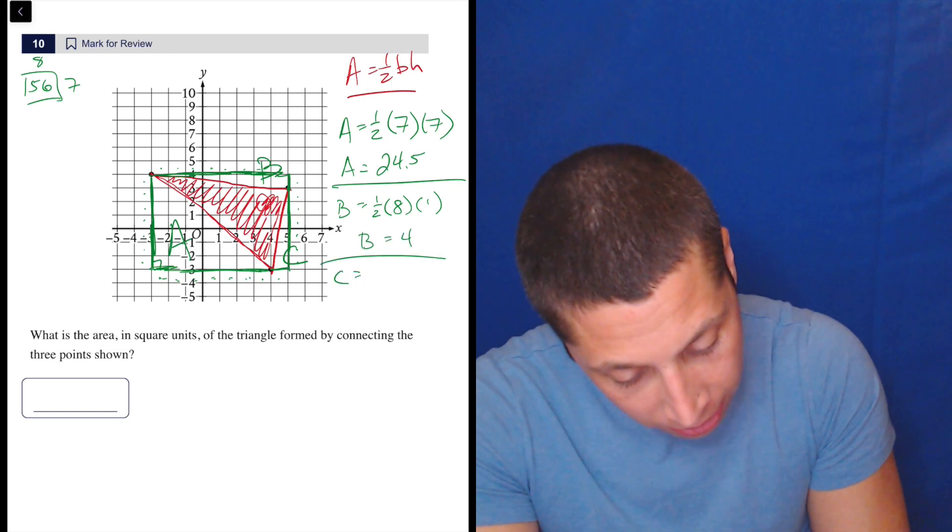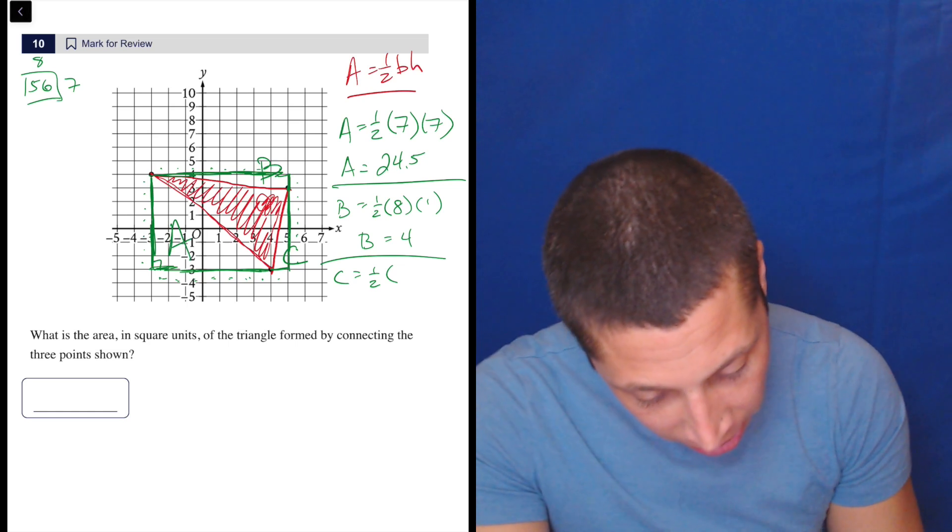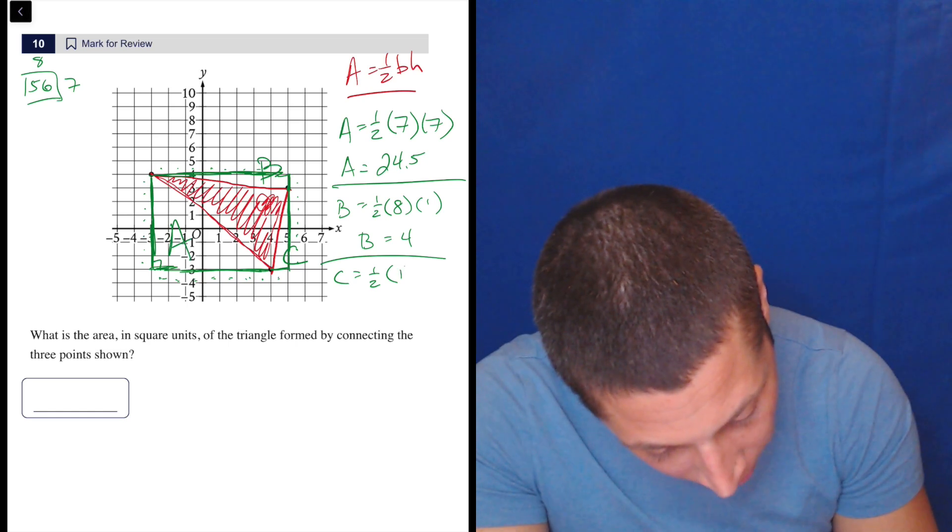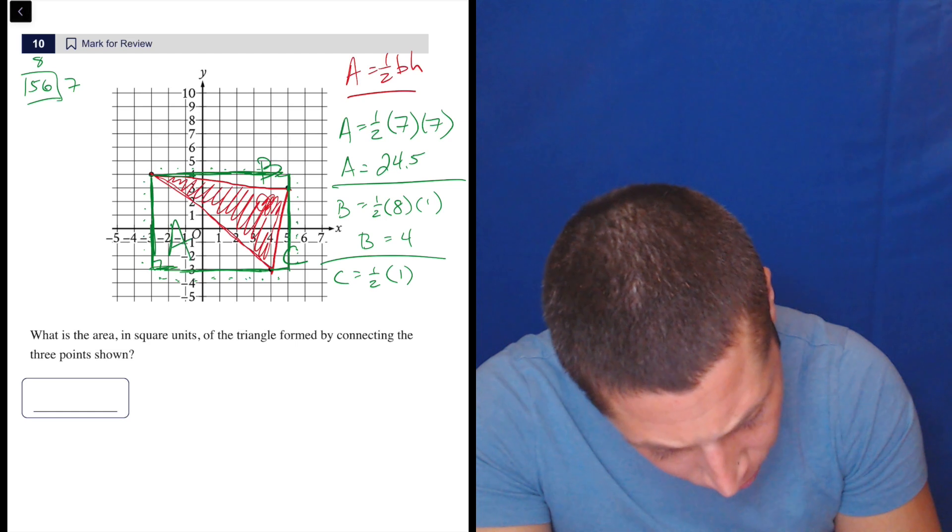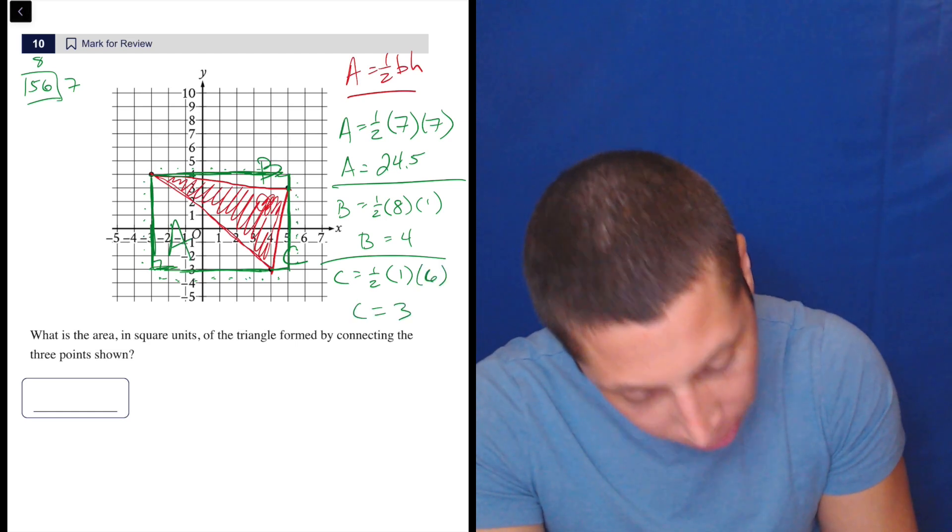And then C also one half base times height. I love it. See how simple this is? We're just repeating the same process. Height is, or base is one. Height is one, two, three, four, five, six. Half of six is three.